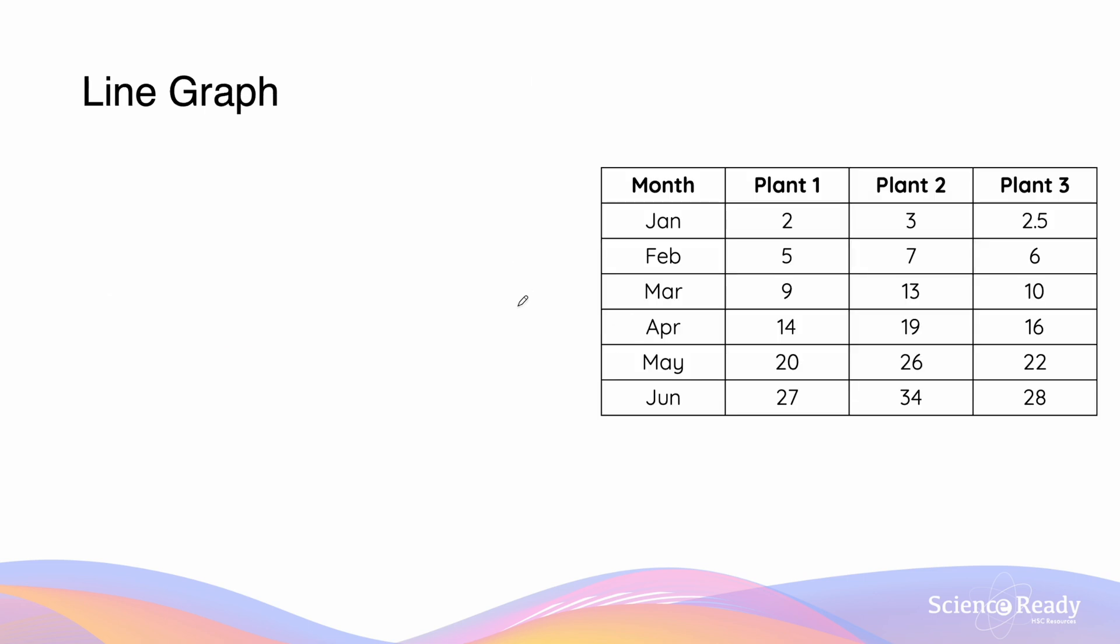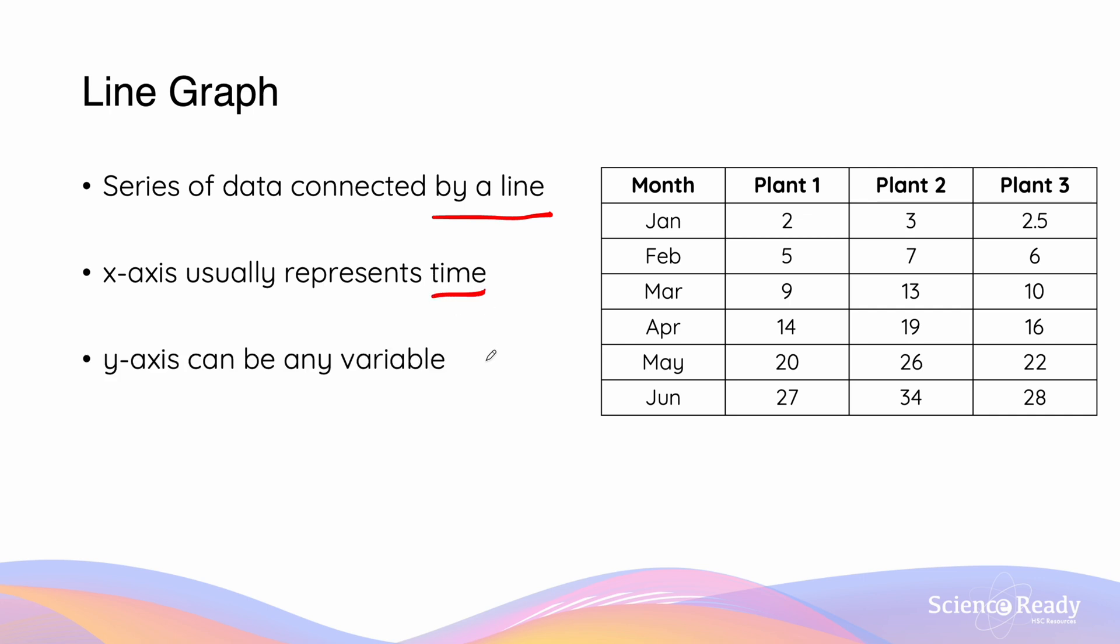The last type of graph is a line graph. A line graph is drawn when a series of data is plotted and then connected by a line. It is important to notice and distinguish between the line graph and the scatter plot by the fact that the data points that are plotted on a line graph are connected. The x-axis is usually going to represent time, while the y-axis can be any other variable.